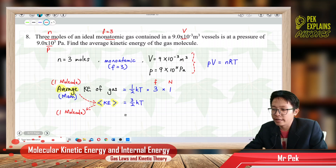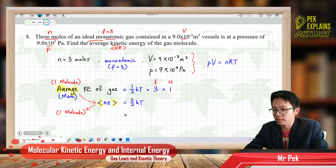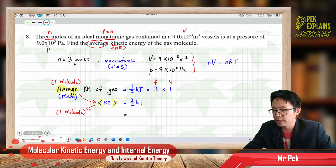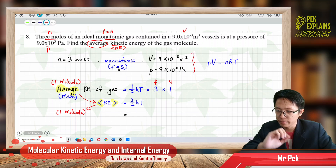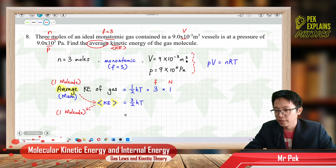We want to find the average kinetic energy of the gas molecule — that means the kinetic energy for one molecule. The volume and pressure are already in SI units: meter cube and Pascal. You must always first check the units and make sure everything is in SI units before substituting into the equation.